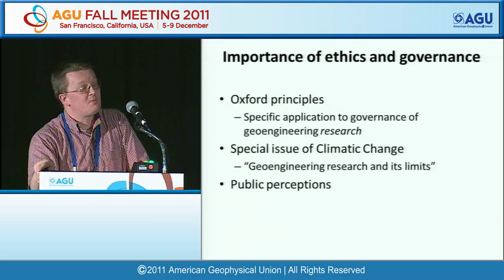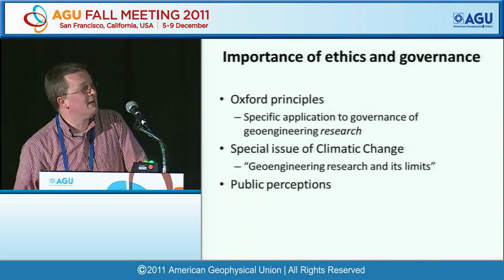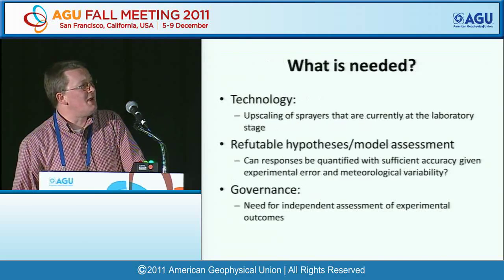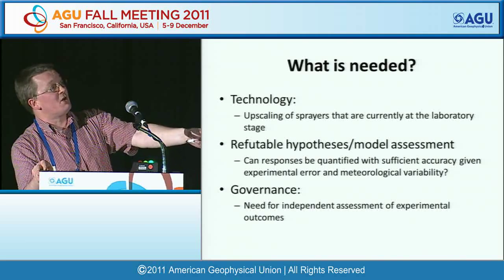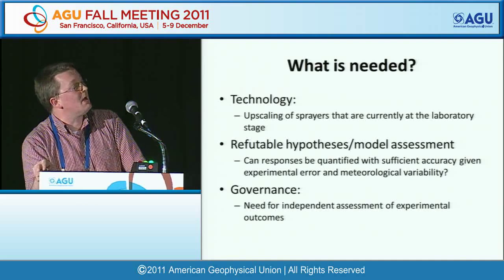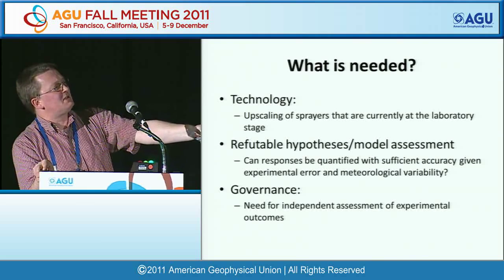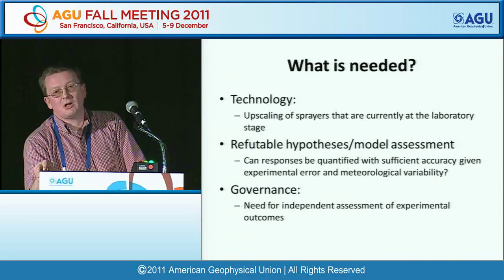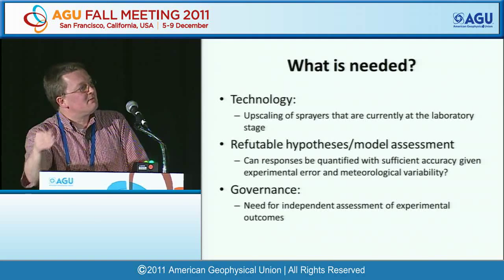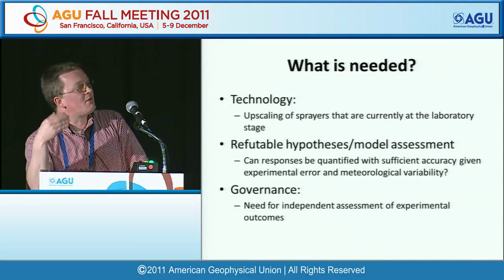Public perceptions of such an experiment matter — the SPICE balloon trial in the UK is an example. If we wanted to do such an experiment, the technology needs upscaling — sprayers working okay in the laboratory would need to be upscaled for significant environmental particle spraying. We need to come up with refutable hypotheses and model assessments with investment slowly increasing over time. And we have to think about governance issues for any experiments involving geoengineering — how do we conduct independent assessment through blue team and red team approaches?